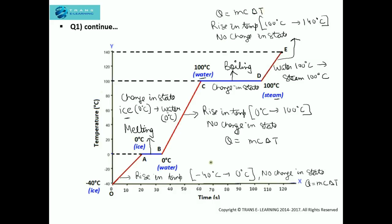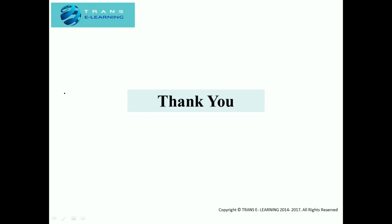That was the heating curve of ice from minus 40 degree Celsius to 140 degree Celsius. Remember: whenever there is a horizontal line, there is no rise in temperature — just a change in state. This is why in the melting phase the heat absorbed is M into latent heat of fusion, and in the boiling phase it is M into latent heat of vaporization. That was all about the heating curve of ice — thank you very much for watching.